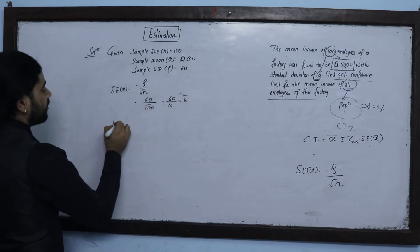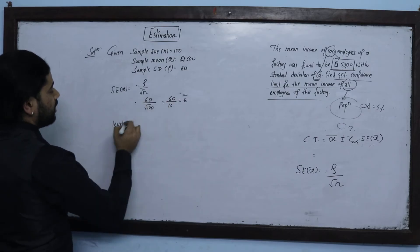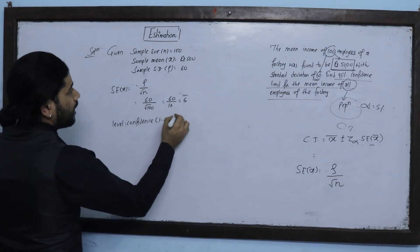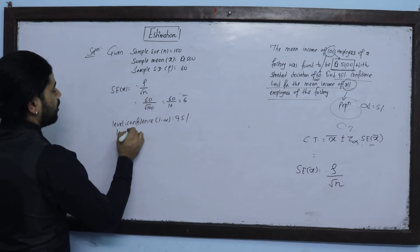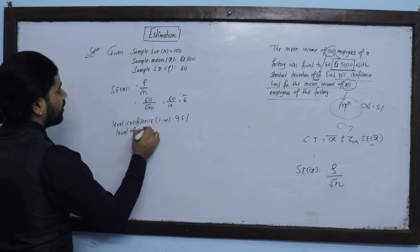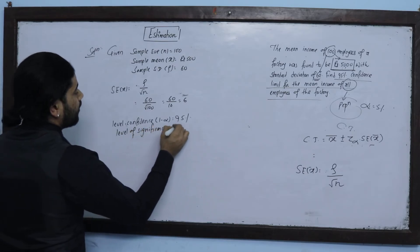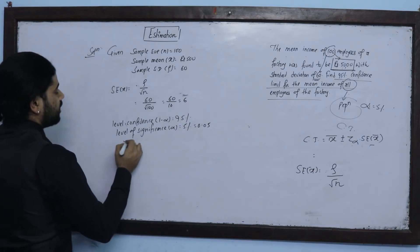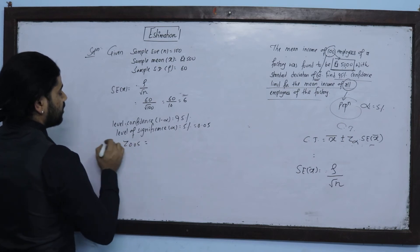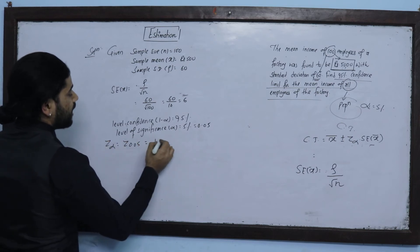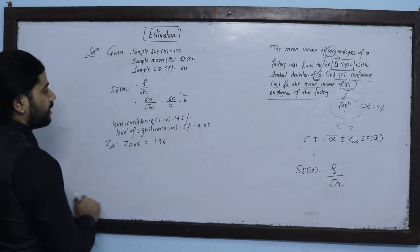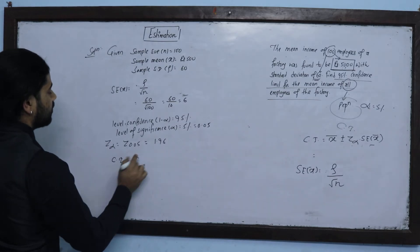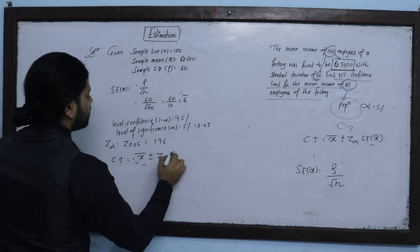Level of confidence 1 minus alpha is 95%, level of significance alpha is 5%, that is 0.05. The tabulated Z value for this is 1.96.